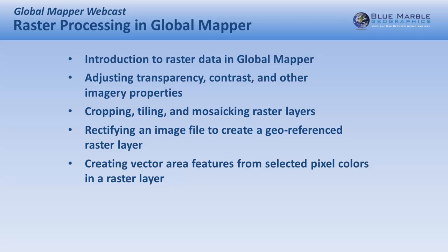We'll also introduce the opposite — rasterizing vectors — which is a simple process. If you want to export a raster file and you have vector features on your screen (lines, points, polygons), they will be rasterized during the export process. There is an option to include those vector features when you export, so that is a fairly automated process. We'll address that in the context of going back and forward between raster and vector files.